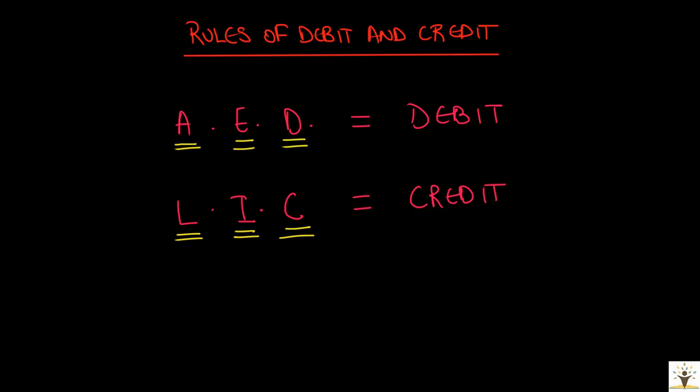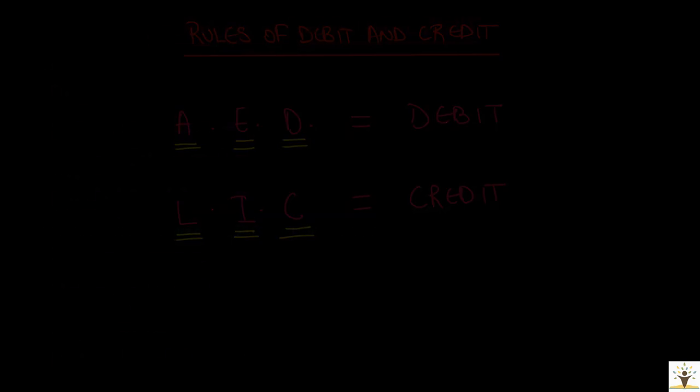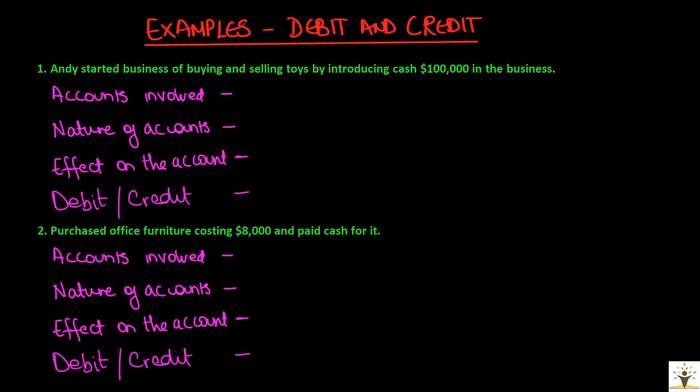Now let's analyze some business transactions to determine what to debit and credit in each of these transactions. One thing that should always be kept in mind is that accounting is always done for and from the point of view of the business and not the owner. One should not confuse the business and the owner.